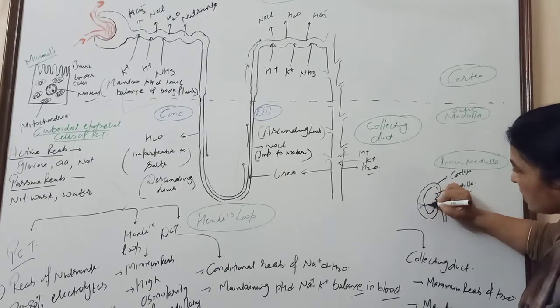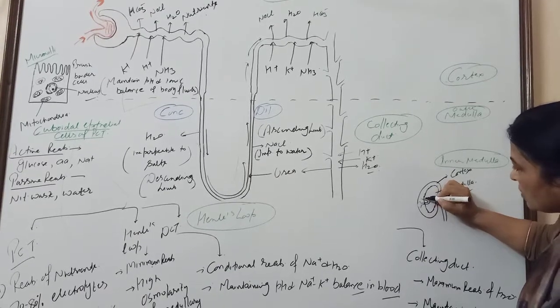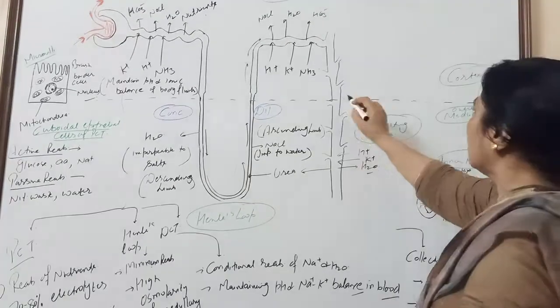This is PCT. Then in this place, the Henle's loop. Then after this, the DCT. The positioning is shown here.